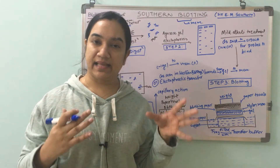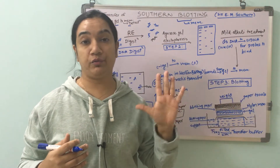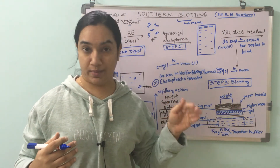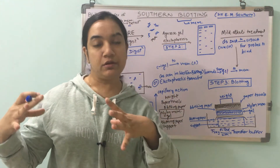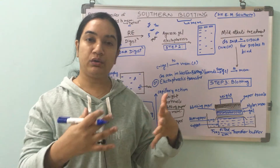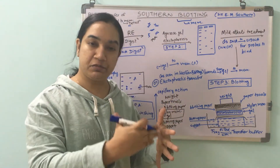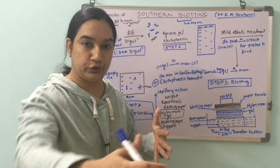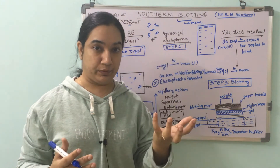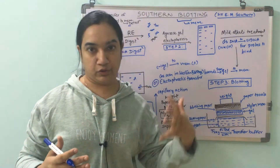Now let's understand southern blotting step by step. Just like western blotting, here also we have five steps and we'll go over all of them one by one. Let's say you are working with a sample and you are interested in some gene — you want to know whether it is present or not, and if it is present you want to isolate it and work further on that particular gene.